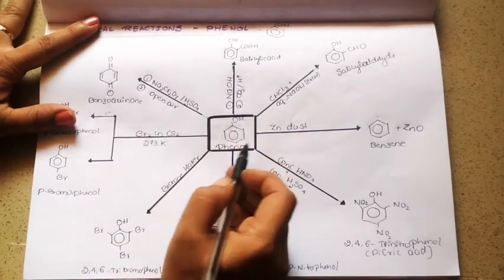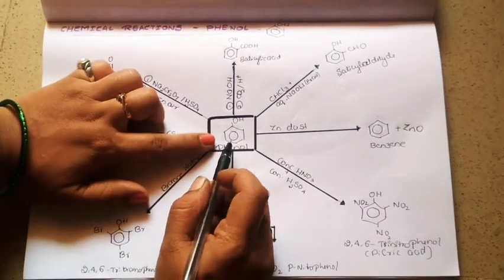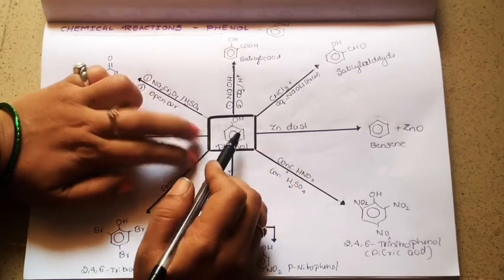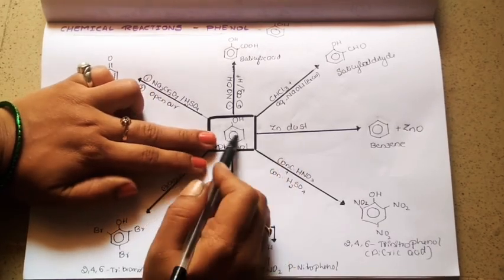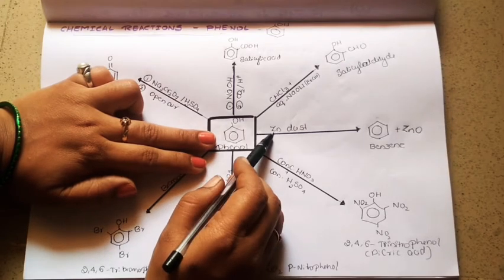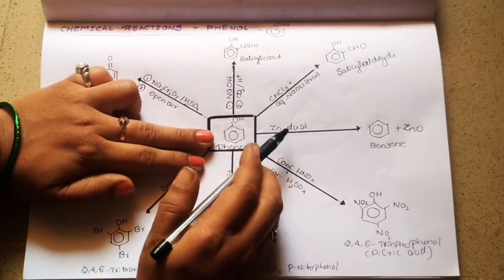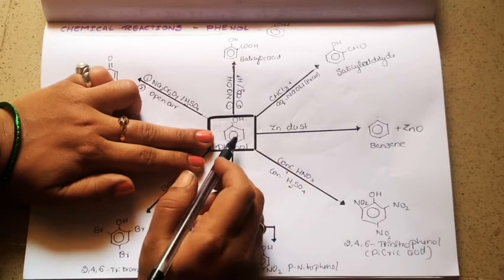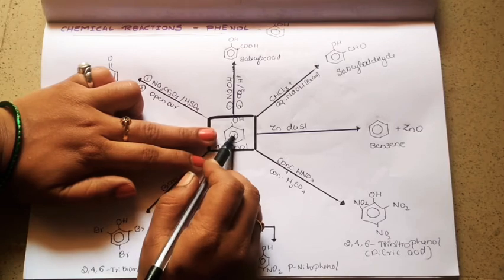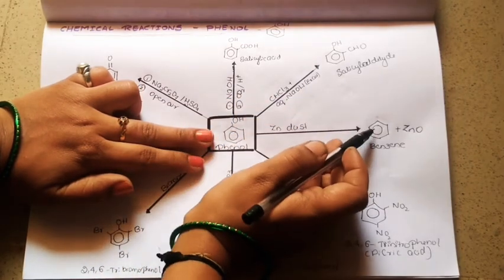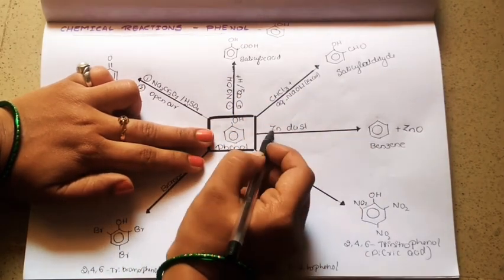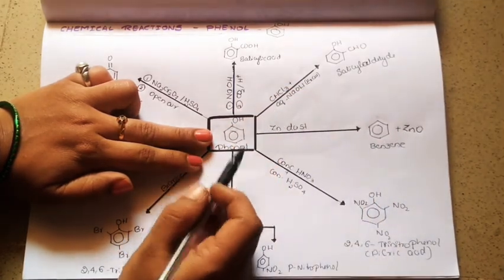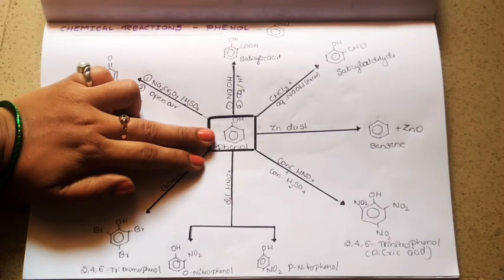The first reaction: whenever phenol is treated with zinc dust or zinc powder, the zinc acts as a reducing agent. So it reduces the phenol and itself undergoes oxidation. Phenol when it undergoes reduction results in the formation of benzene, and zinc undergoes oxidation to give zinc oxide.